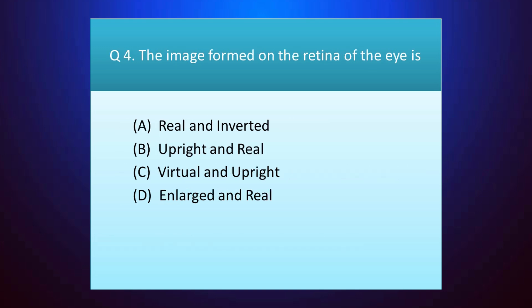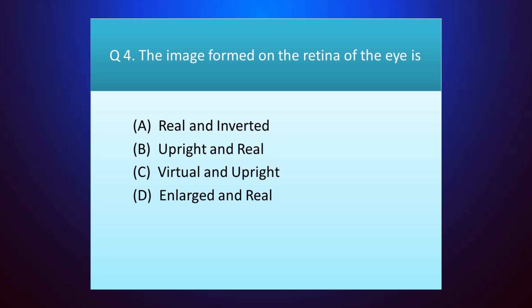Question number four: the image formed on the retina of the eye is — your time starts. The answer is option A — real and inverted.